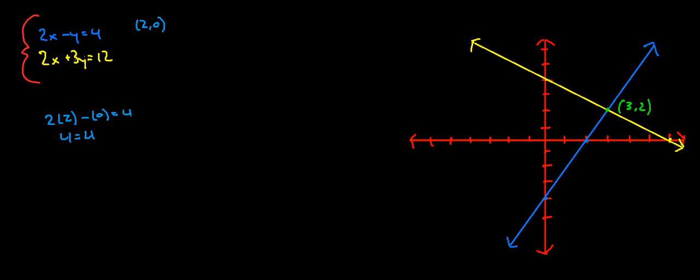If I put (2, 0) into the second equation: 2 times 2 plus 3 times 0 is equal to 12, giving 4 is equal to 12. This is not a true statement. The reason is that (2, 0), while it is on the blue line, it is not on the yellow line. So this brings me back to what am I looking for — I'm looking for a set of numbers that is true for both equations, that is a solution to the system of linear equations.